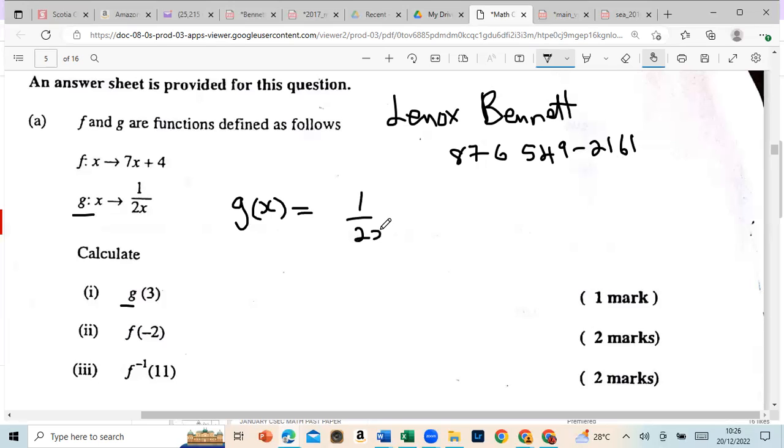So g(x) is 1 over 2x. We're gonna substitute x in the equation, so anywhere we see x we're gonna put 3. So g(3) is 1 over 2 bracket 3, which means multiply. So we're gonna do 2 times 3 which is 6, and that's it.